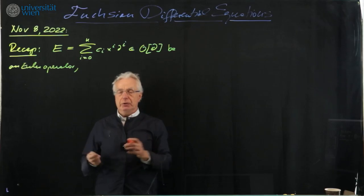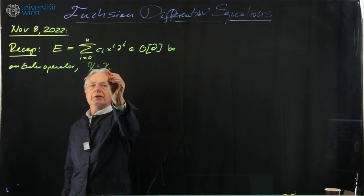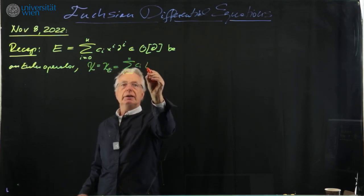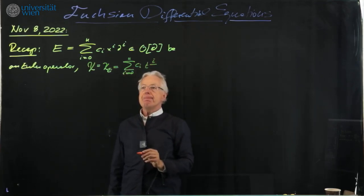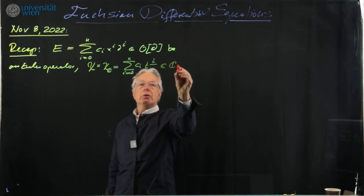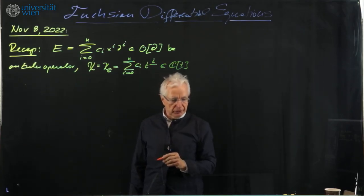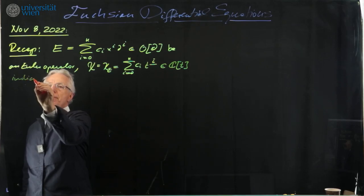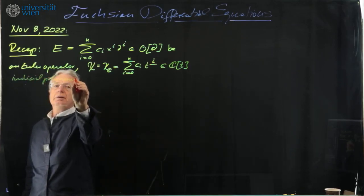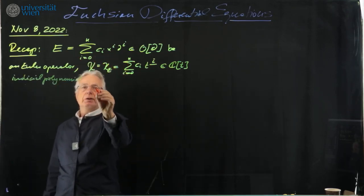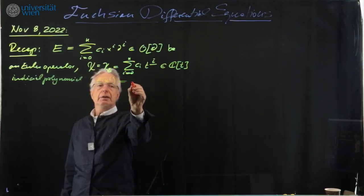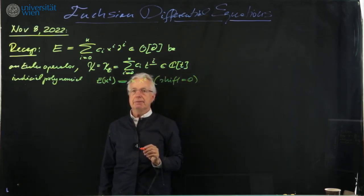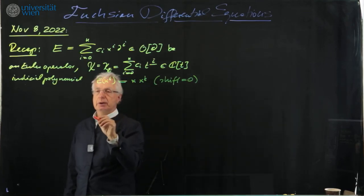In this case everything is combinatorial. We defined the indicial polynomial χ(E) = Σ cᵢ zⁱ where we use falling factorials. This is a polynomial in ℂ[t]. E sends monomials xᵏ to multiples of xᵏ, since shift equals 0. So it sends monomials to monomials — that's a particularly easy situation.